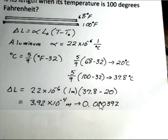And the delta L, and again you should pause and do this calculation yourself. First do the subtraction here, 37.8 minus 20, then times 1 meter, then times 22 times 10 to the minus 6. And we find the change in the length is 3.92 times 10 to the minus 4 meters, 0.000392.